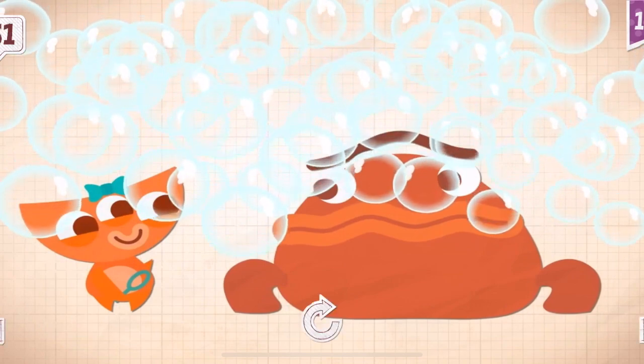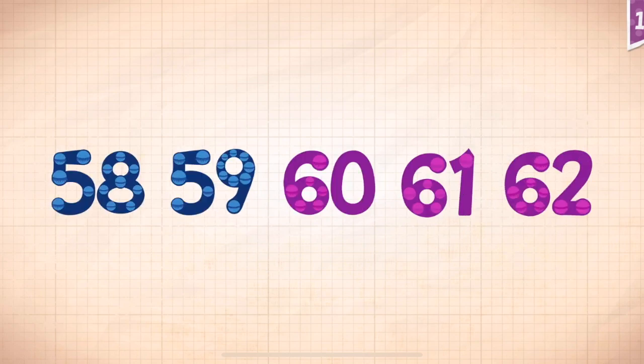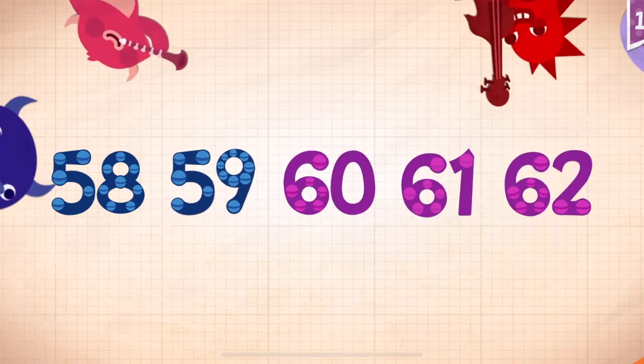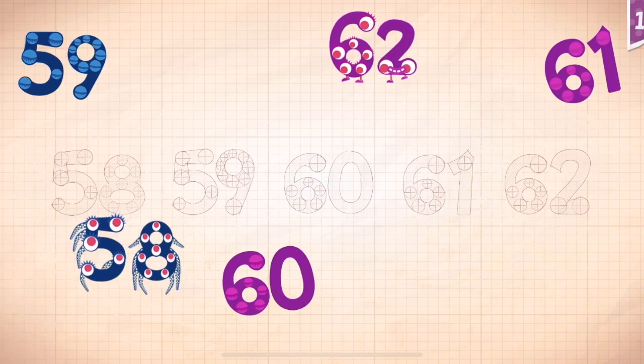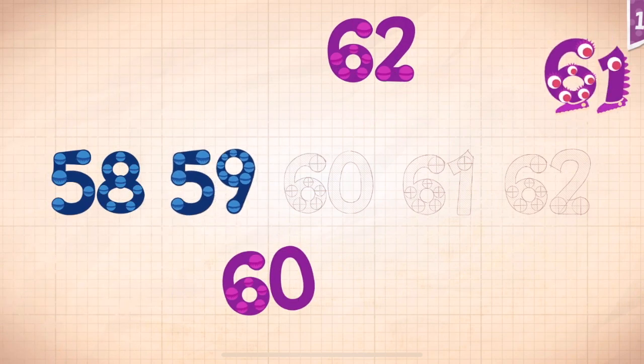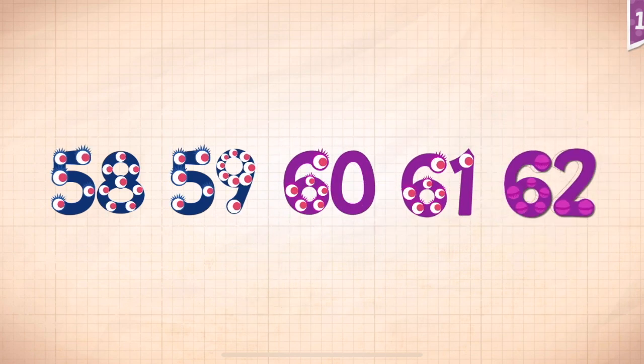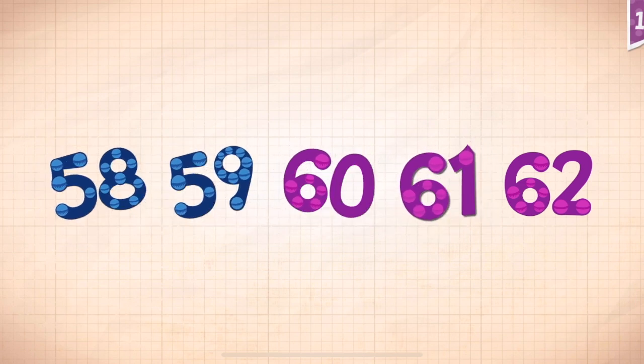Grumpkin hiccuped out 61 bubbles. Count by ones starting at 58. 58, 59, 60, 61, 62.